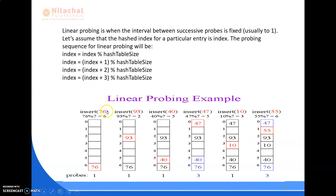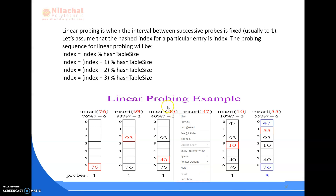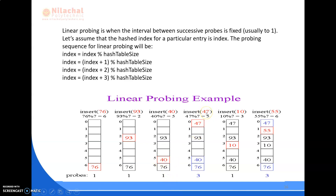Let's see a simple example of linear probing using a table of size 7, so we compute x mod 7. Inserting 76: 76 mod 7 = 6, so 76 is stored at index 6. Inserting 93: 93 mod 7 = 2, stored at index 2. Inserting 40: 40 mod 7 = 5, stored at index 5. Inserting 47: 47 mod 7 = 5, but index 5 is already occupied.